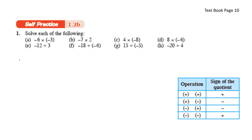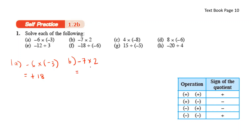Take a look at self-practice 1.2b. Negative 6 times negative 3 — negative and negative will result in positive. So we get positive 6 times 3, which is 18. B: Negative 7 times 2 — negative and positive, you get negative. 7 times 2, you get 14.